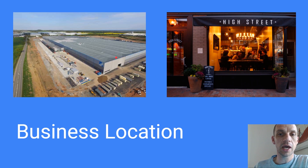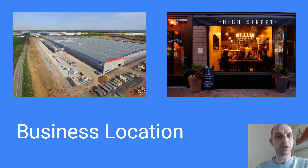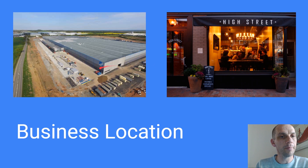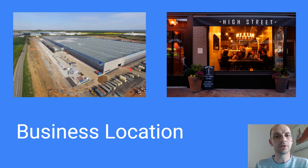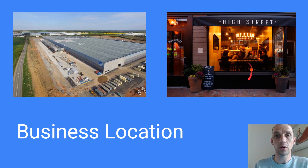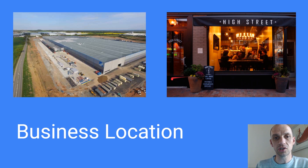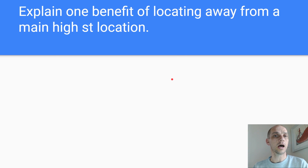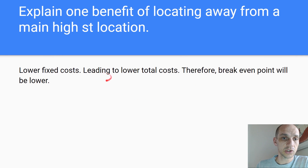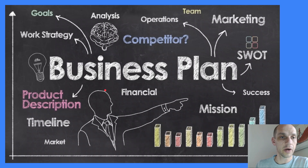Let's look at business location — a lovely dichotomy. Amazon would choose to locate close to link roads to get on the motorway easily, while other stores want to locate on high streets because of footfall. Explain one benefit of locating away from the main high street: lower fixed costs, leading to lower total costs. Therefore, the break-even point will be lower.